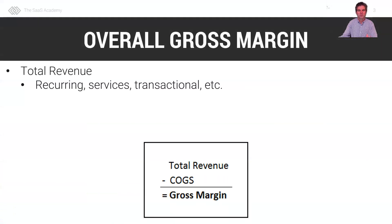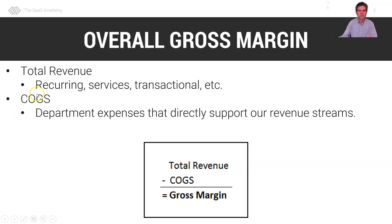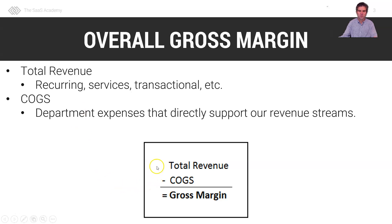For our overall gross margin, first we need total revenue. Total revenue for SaaS may include recurring revenue, professional services, transactional, and other revenue streams. For COGS, we need our department expenses that directly support our revenue streams. So our gross margin formula is simply: total revenue minus COGS equals gross margin.